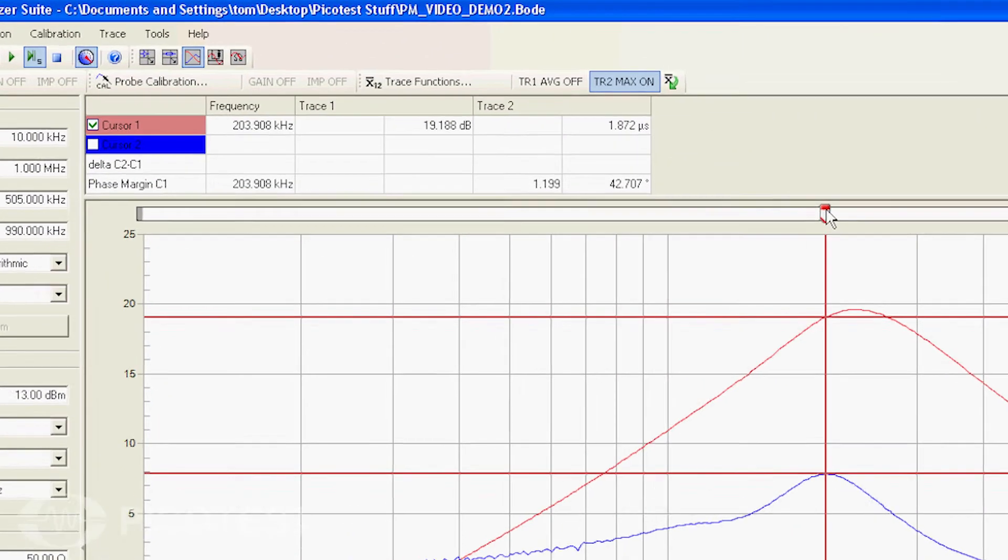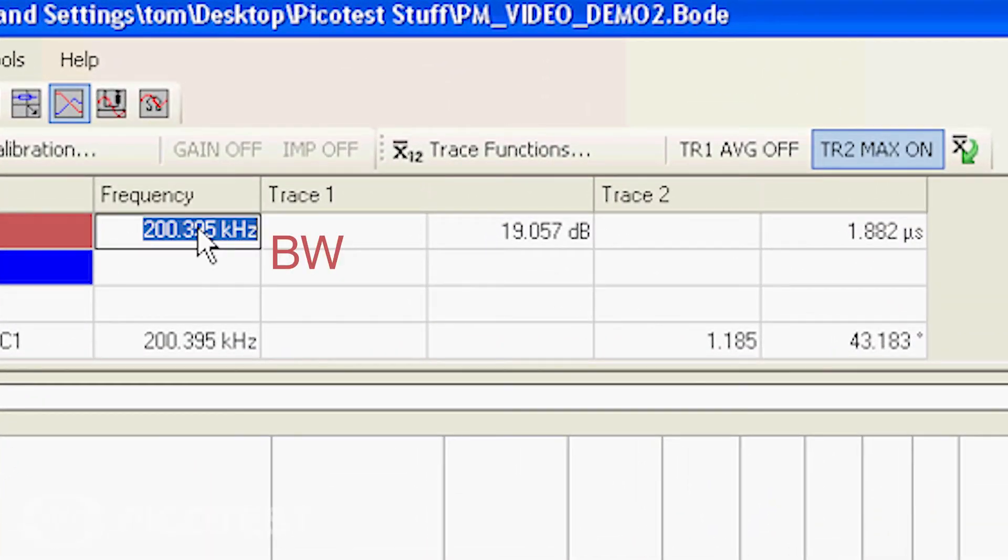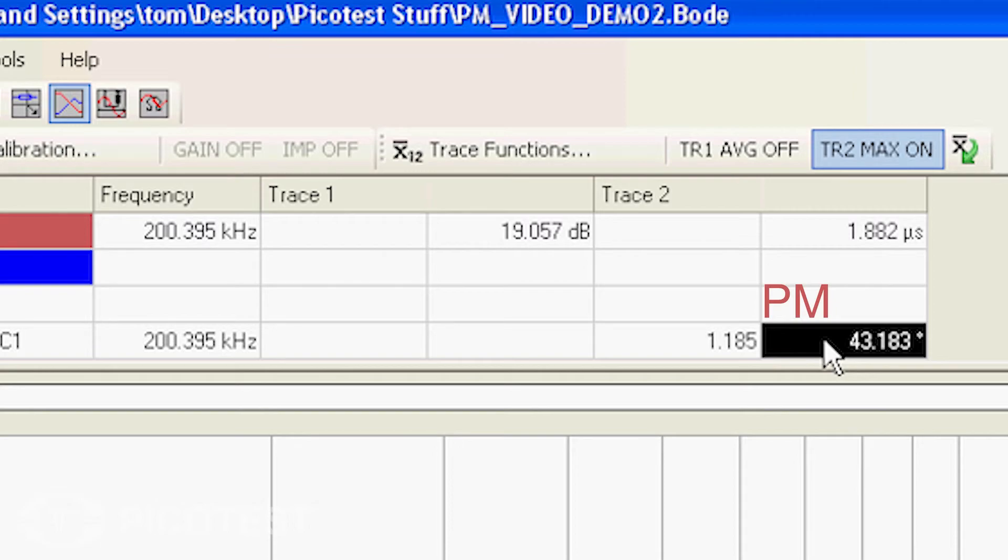From this measurement, we can see our system has a bandwidth of about 200 kHz and a phase margin of 43 degrees.